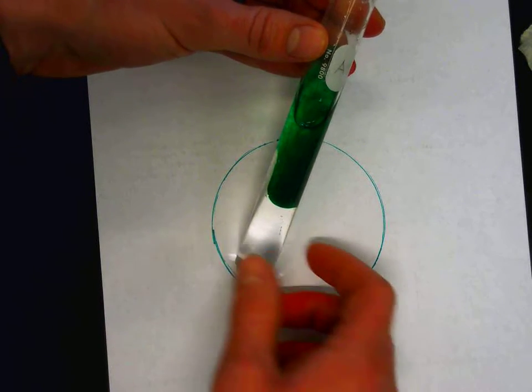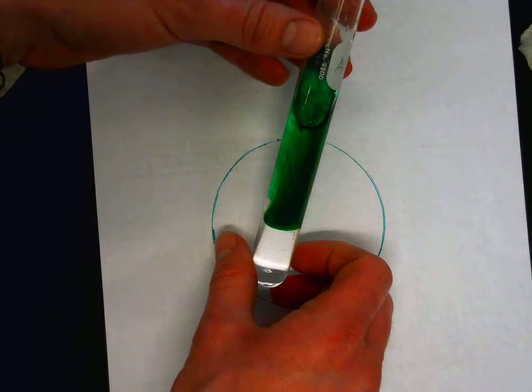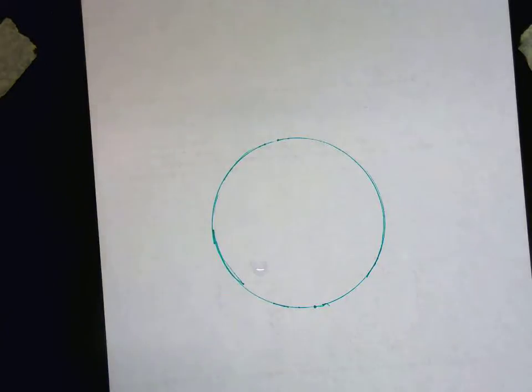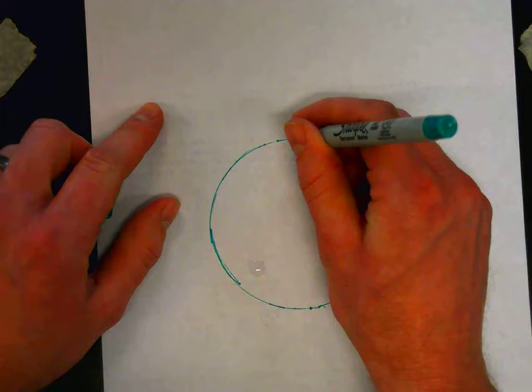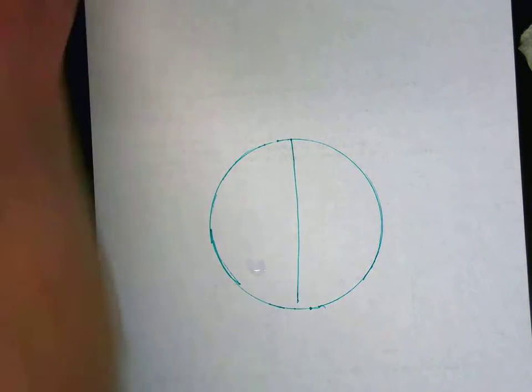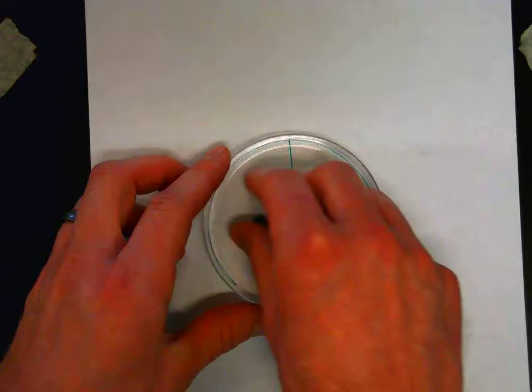Well, we know this is everyday experience, but why does that happen at a fundamental level? Well, the answer is entropy. Let's think about it. So let's say I have two divisions on this circle, and in my circle, I have one bead.